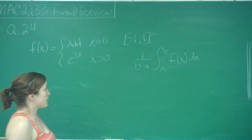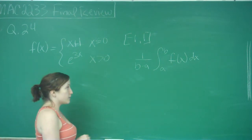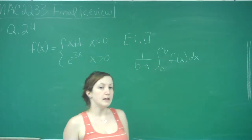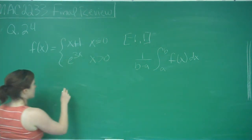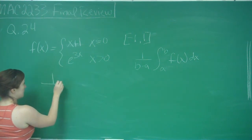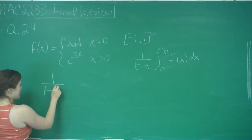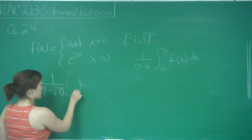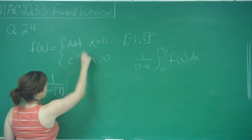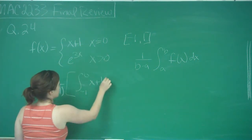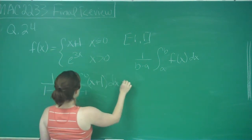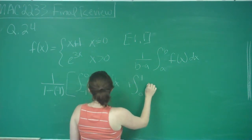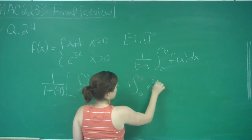So for us, that would be 1 over 1 minus negative 1, from negative 1 to 1 of f of x dx. But because we have a piece-wise function, we're actually going to have to split it into two integrals. So I still have my 1 over b minus a, which is 1 minus negative 1, times the integral from negative 1 to 0 of x plus 1 dx, plus the integral from 0 to 1 of e to the 3x dx.